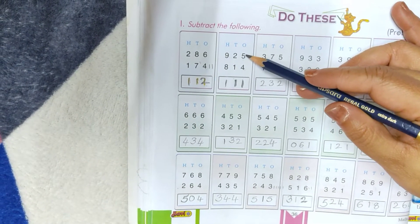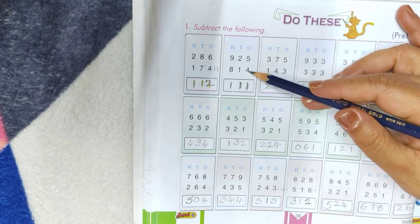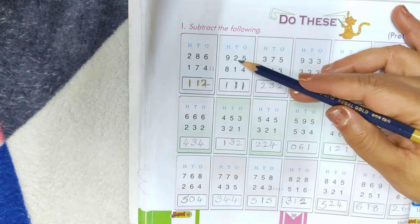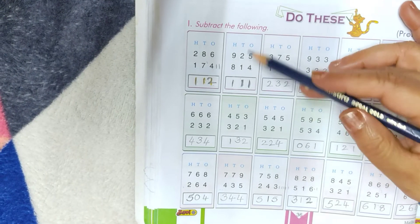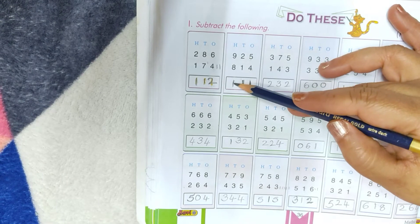Write 1 under 1's place. 2 minus 1, 1. Write 1 under 10's place. 9 minus 8, 1. Write 1 under 1's place.